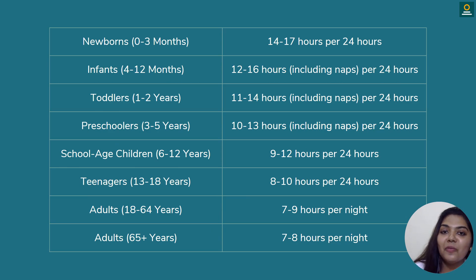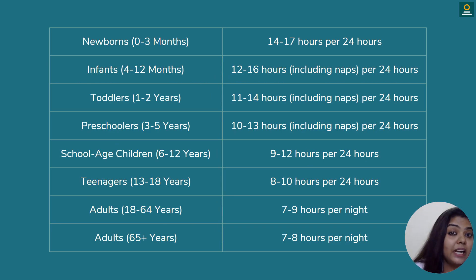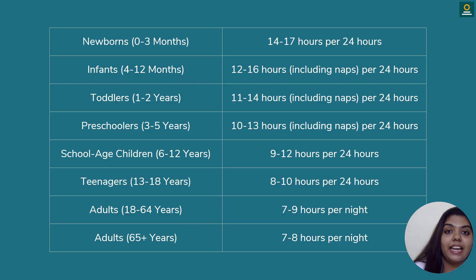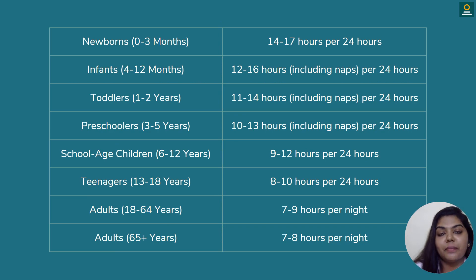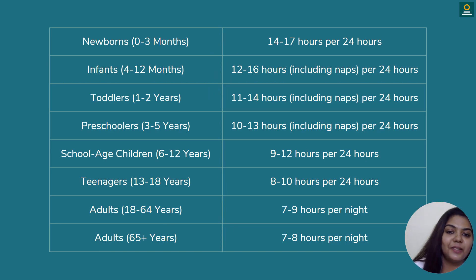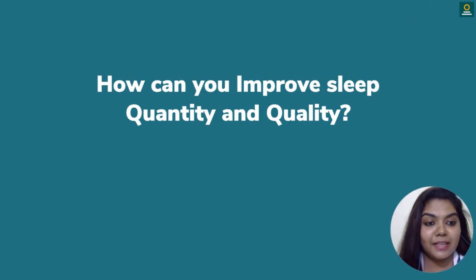Let me know through the comments how much sleep duration you have in a day, and whether your sleep quality is effective — which characteristic is affecting your sleep quality? Is it that you are not able to fall asleep within 20 minutes, or is your sleep interrupted with waking up more than 2 to 3 times per night? Let me know through the comments. Now, how can we improve sleep quantity and sleep quality?